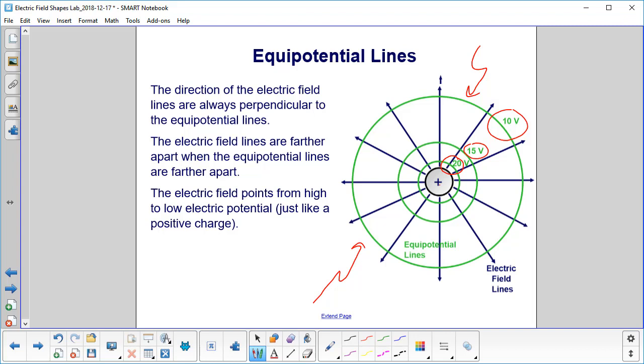The electric field lines are perpendicular. They're these blue lines here. They are farther apart when the equipotential lines are farther apart. So you can see the distance here between your electric field lines.